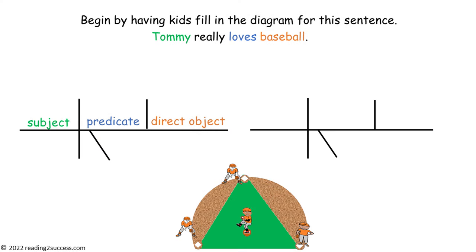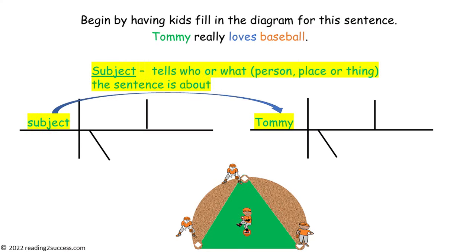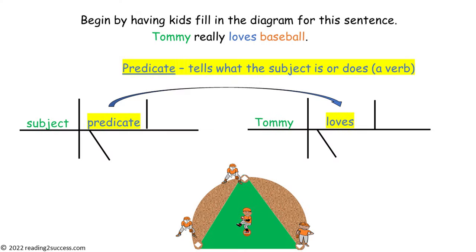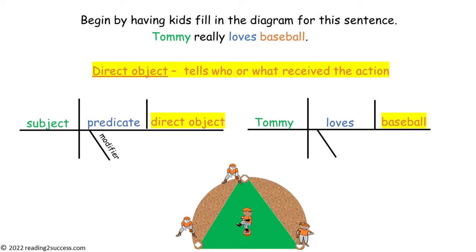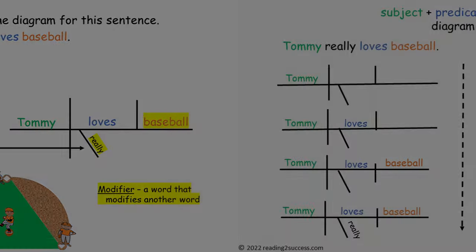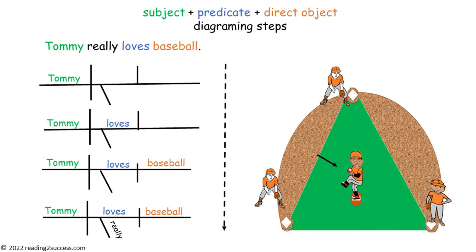Now have kids fill in the diagram for this sentence. Tommy is the subject. Loves is the predicate. And baseball is the direct object. The modifier is really, and it modifies the predicate loves. These are the steps that were followed to diagram the sentence Tommy really loves baseball.